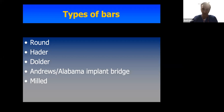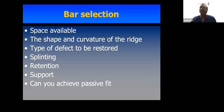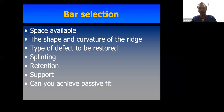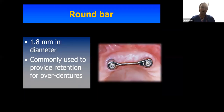When deciding to use a bar for prosthetic rehabilitation, several criteria guide your selection. The most important is the space available — do you have enough space for a bar and a prosthesis on top without the prosthesis fracturing? Other factors include the shape and curvature of the ridge, the type of defect to be restored, whether you need to connect dental implants, the kind and degree of retention and support needed, and whether you can achieve passive fit.